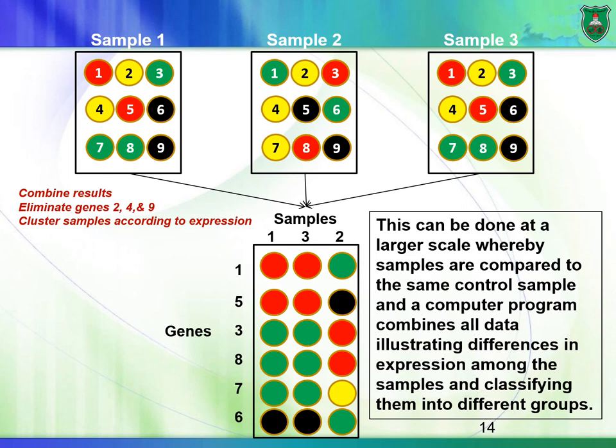The trick here is not only doing the experiment itself — it's the bioinformatics, that is the analysis of results. No person would be able to look at the expression of all 20,000 genes across all those spots, so it's all computer-generated.